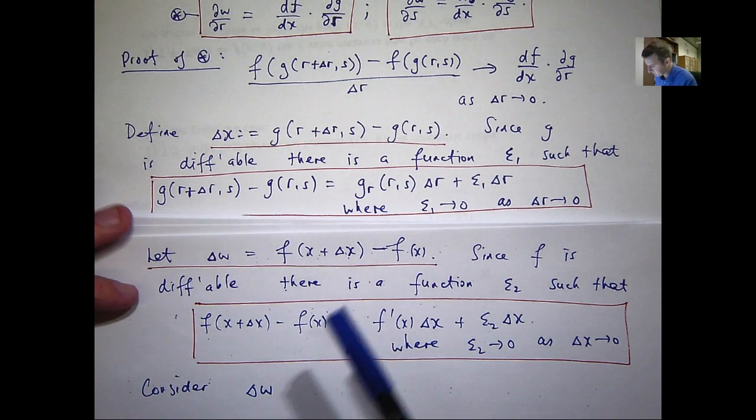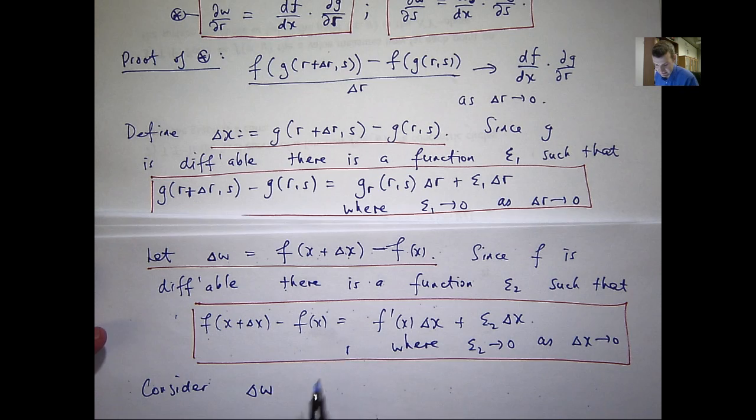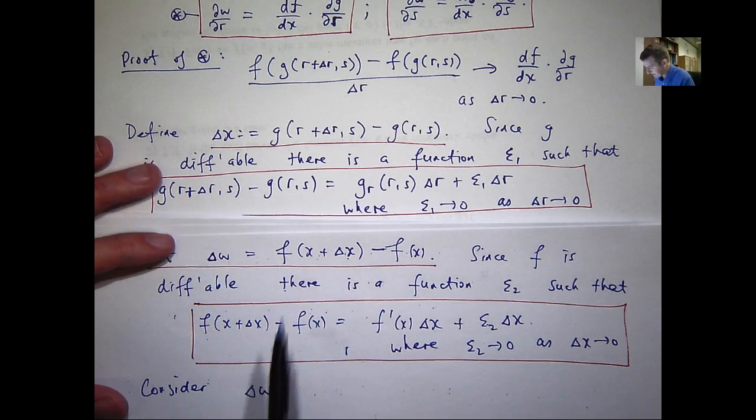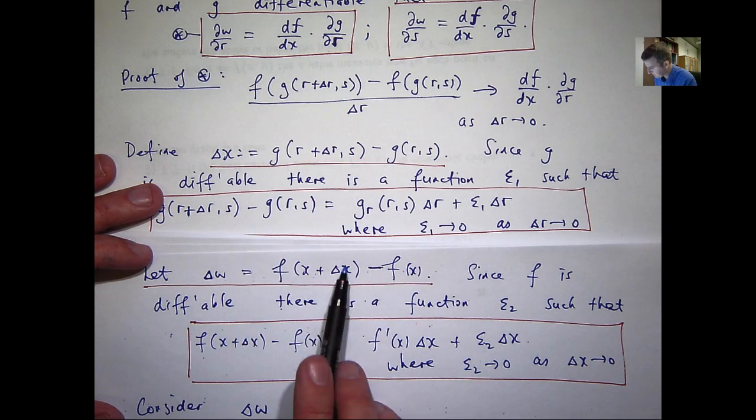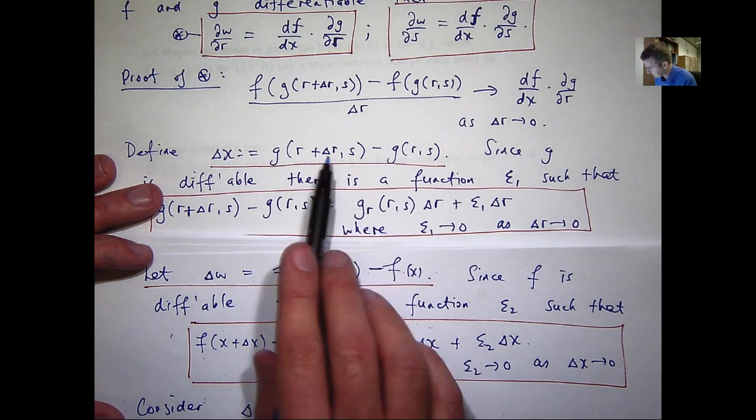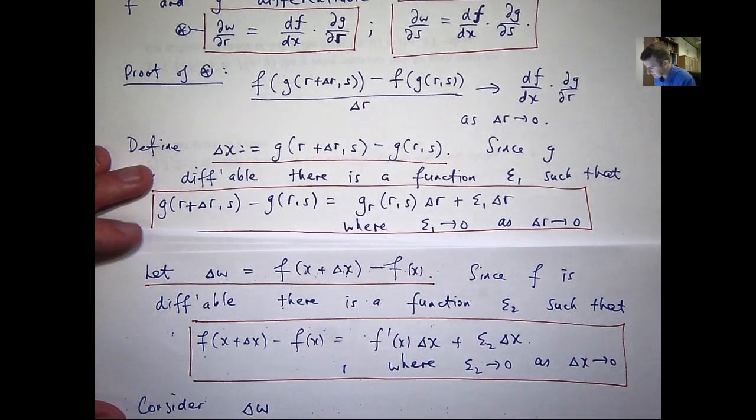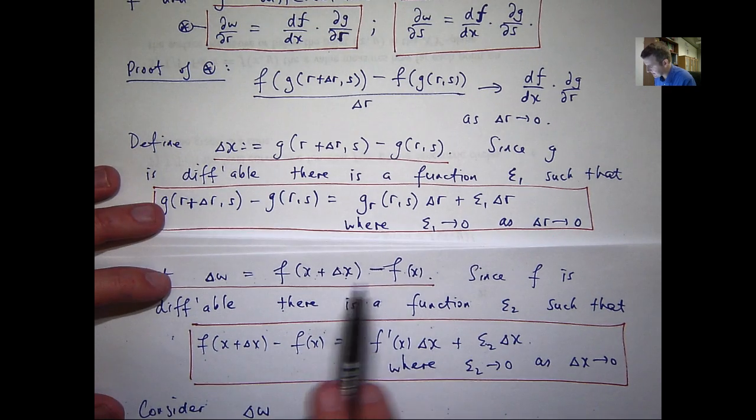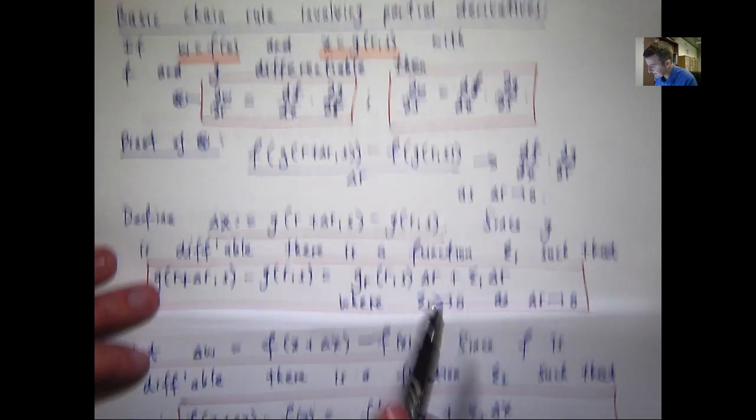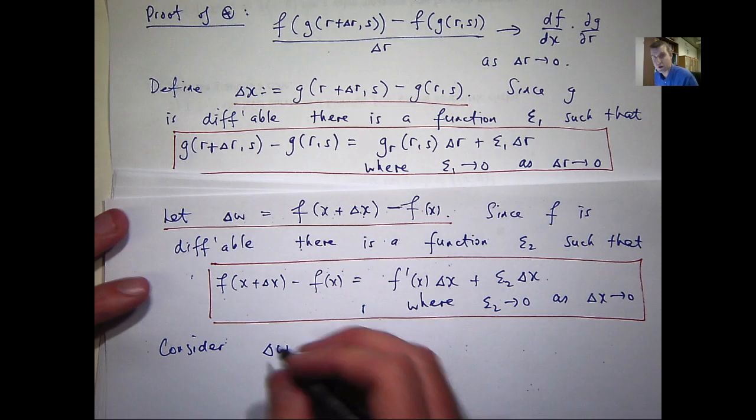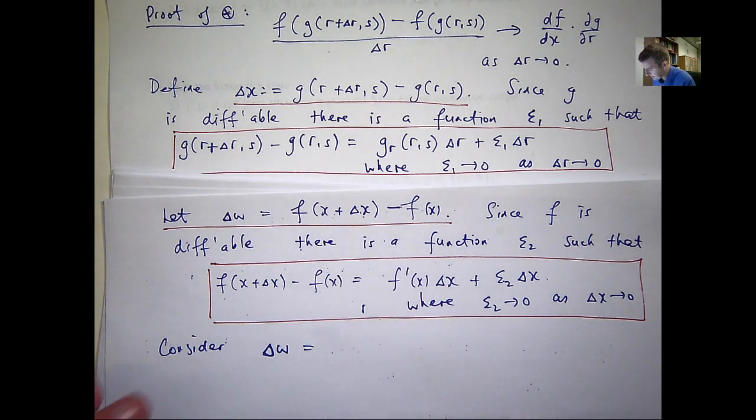Now, if you look very carefully, when you write out this delta w, it's just this minus this. And if you replace your delta x in here with this, and replace x with g of r comma s, this is basically the top line here. But I'm just using more of a compact notation.